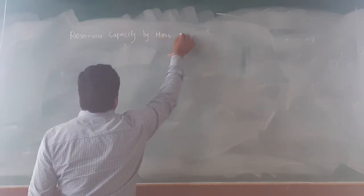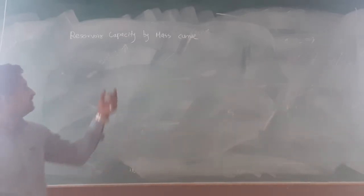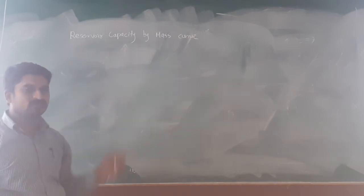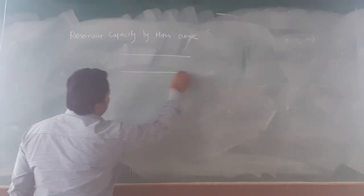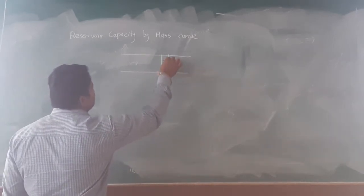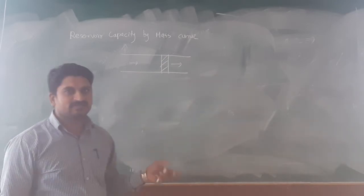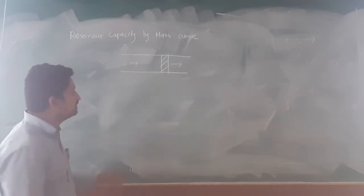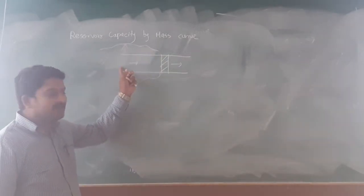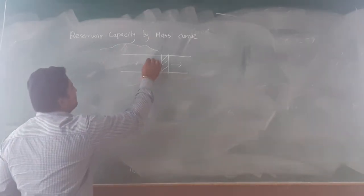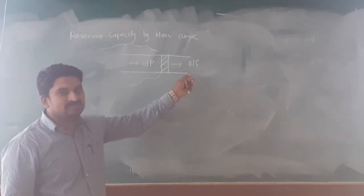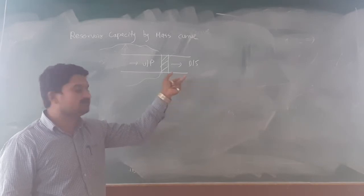Firstly, let's understand what is meant by a reservoir. A reservoir is nothing but the water body formed due to construction of an obstruction across a river. Suppose this is the river flowing in this direction — if you construct any obstruction in the form of a dam, a weir, or a bridge, the flow of the river gets obstructed and there is a formation of a water body on the upstream side. Such a water body is known as a reservoir. The upstream side is where the water gets stored, and the downstream side is where the water is discharged through a sluice or any output.